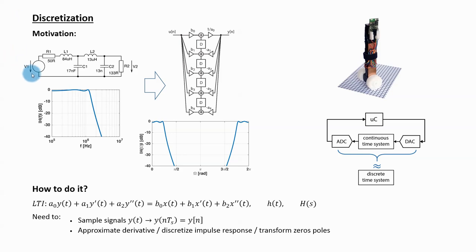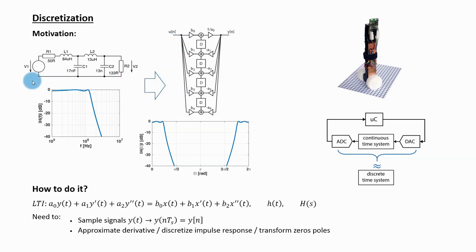Discretization is a process of turning a continuous time system into a discrete time system. We use it, for example, in the design of discrete time IIR filters. Before digital IIR filters became common, people used continuous time analog filters and developed nice procedures for their design. Today, when I want to design a discrete time digital IIR filter, I can still utilize what was developed for continuous time filters.